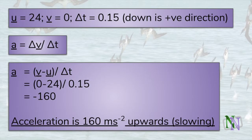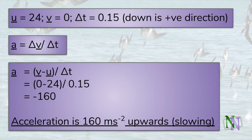First we write down the information as numbers. Initial velocity is 24, final velocity is 0, and delta t is 0.15 seconds. We substitute these values into the formula and find her acceleration, noting that the change in velocity is negative. The answer is minus 160 meters per second squared. The negative sign indicates that the acceleration acts in the opposite direction to the velocity — it's upwards. She has slowed down, or decelerated.